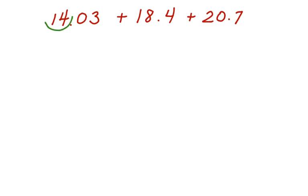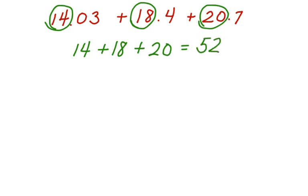Again, let's take the front ends. 14, 18, and 20. If we add 14 plus 18 plus 20, we get an estimate of 52.